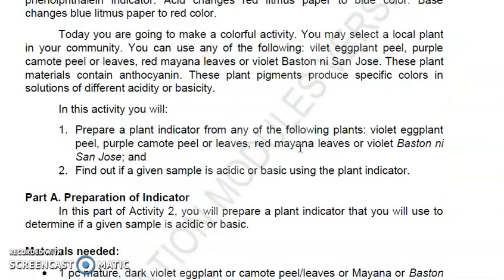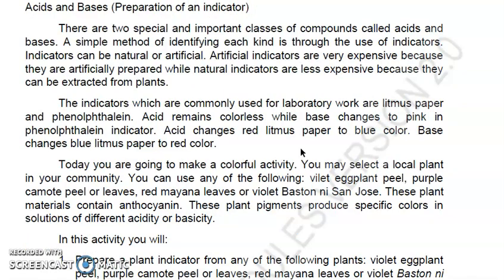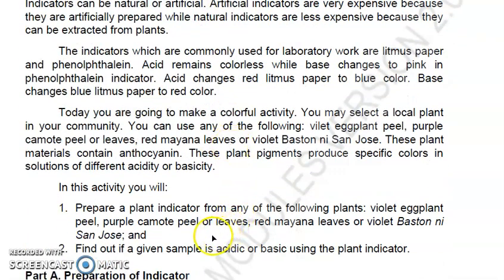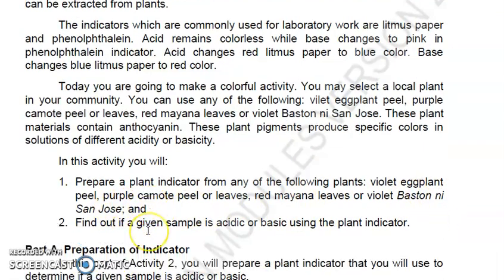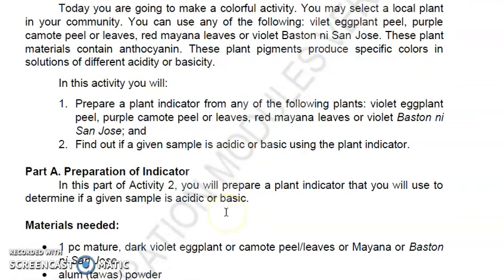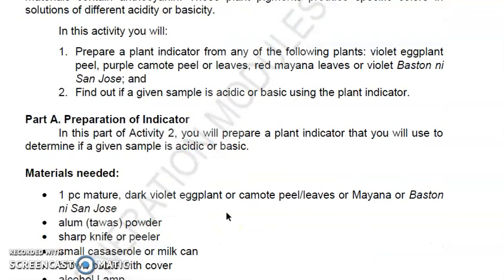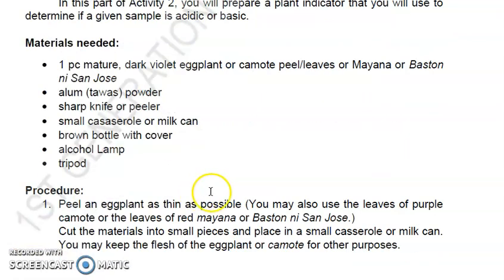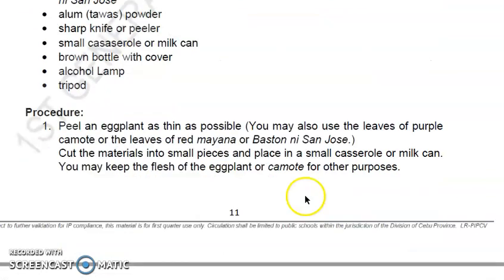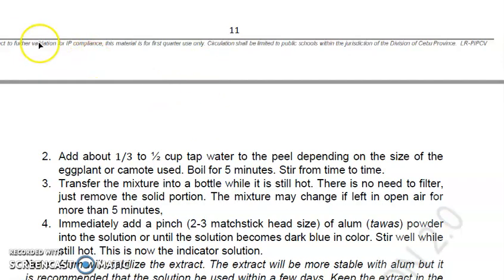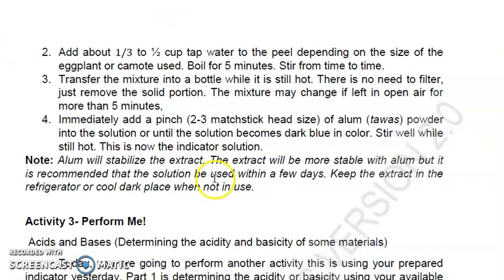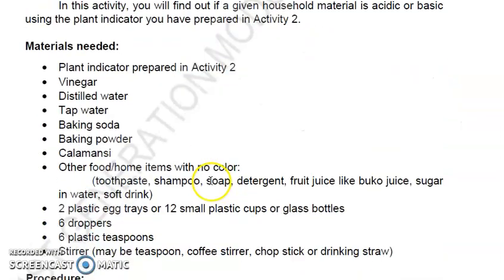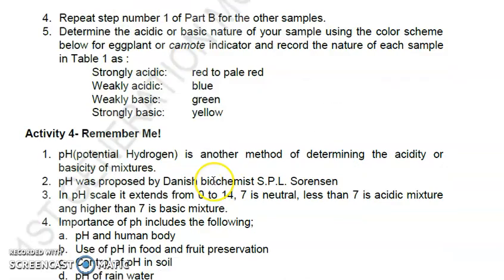Let's proceed to acids and bases. First, you're going to prepare this indicator using the eggplant peel. Boil it, and after boiling, get the liquid. After boiling, add alum powder to stabilize the color. And later on, when it cools down, you can use it to identify if a substance or compound is acidic or basic. We're done in the previous discussion about elements. This time about acids and bases - they are examples under compounds. Just read here. There are also answer keys at the end part.